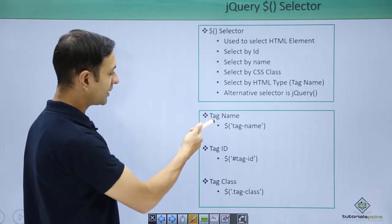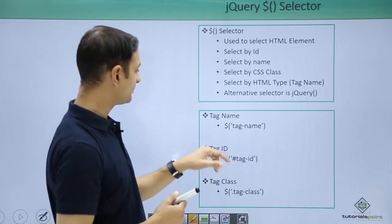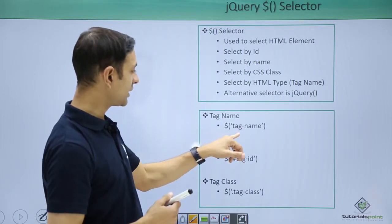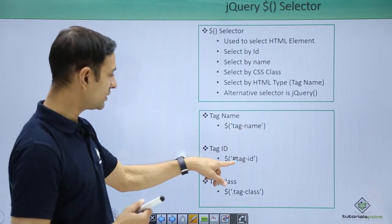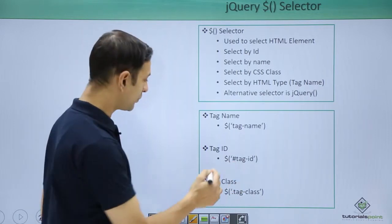Let us see the example. Tag name, select by name, you pass like this: dollar tag name. Tag ID, you pass like this: dollar hash tag ID. This is important.